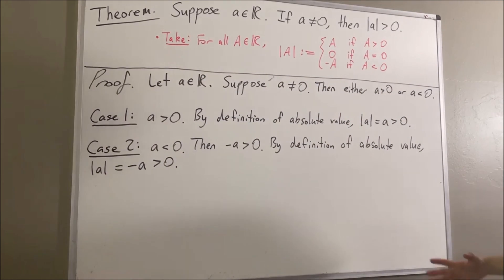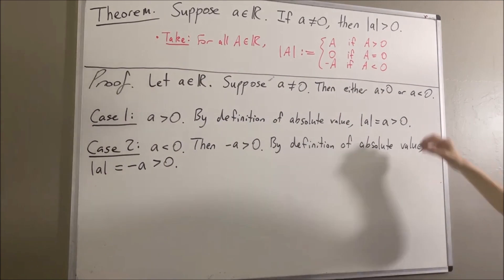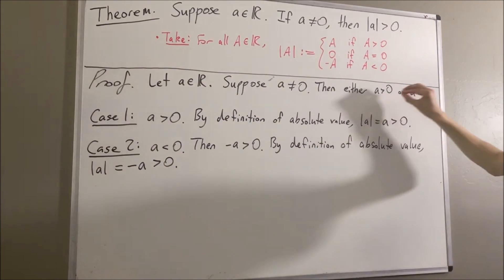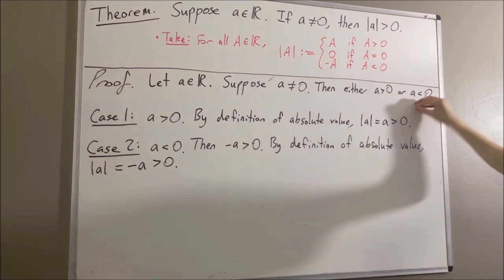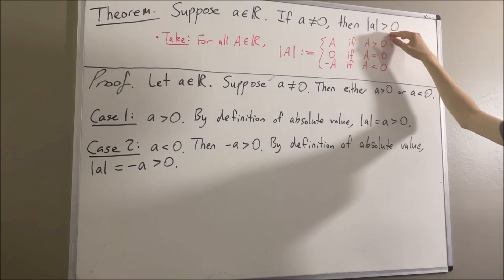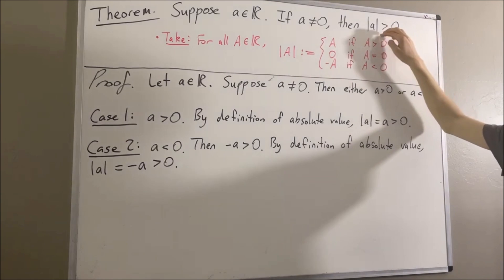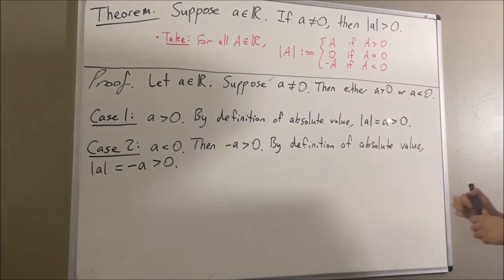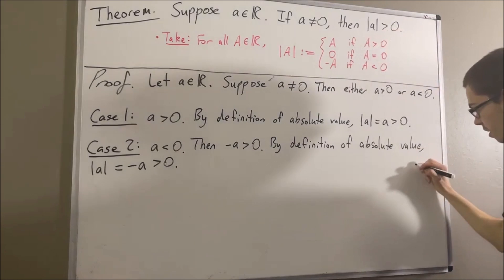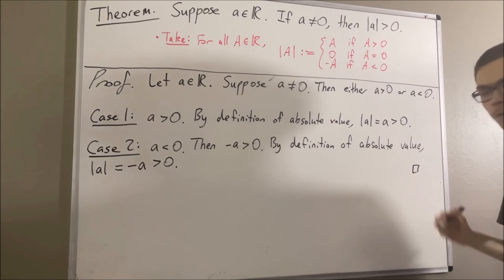Putting this together, no matter which one of these happens to be true, we have that the absolute value of A is greater than zero. And that's exactly what we wanted to prove. So this completes the proof.